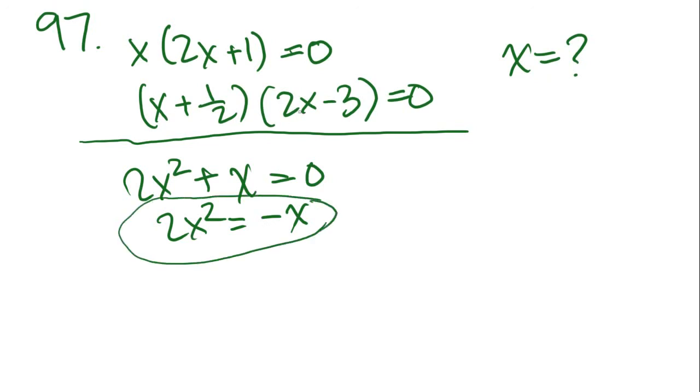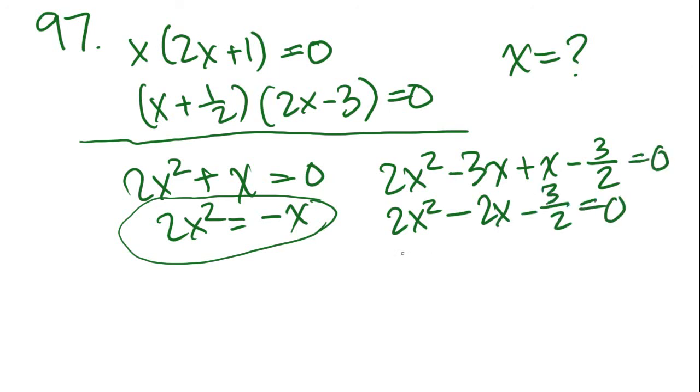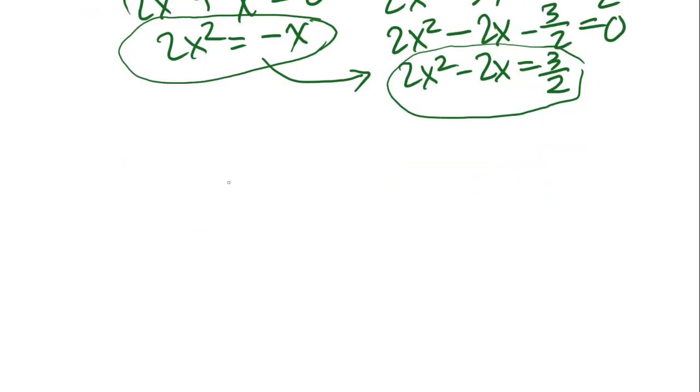For the second equation, FOIL—let's do the outside first. 2x times x is 2x squared. Negative 3 times x is negative 3x. 2x times 1/2 is going to be just x. And finally, 1/2 times negative 3 is negative 3/2. Add these together, and you get 2x squared minus 2x minus 3/2 equals 0, so 2x squared minus 2x equals 3/2. So now we have two separate equations. What's interesting here is that we know 2x squared equals negative x, so let's substitute that into equation number 2. Let's see what we get. What we get is negative x minus 2x equals 3/2. That is negative 3x equals 3/2.